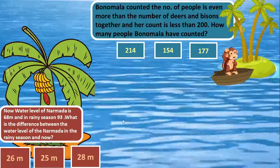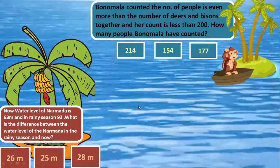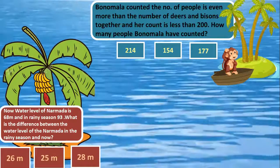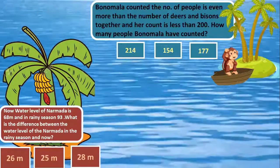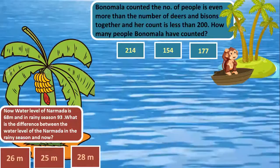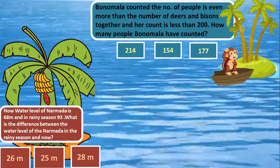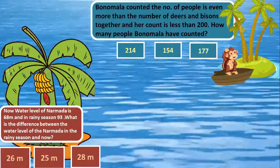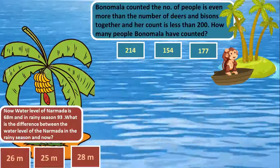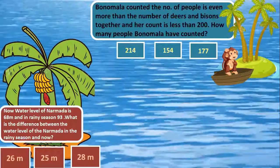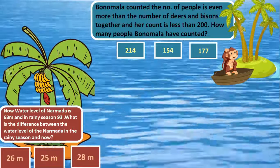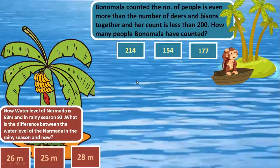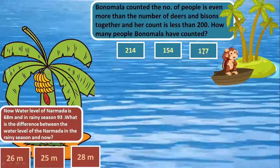Bono Mala counted the number of people is even more than the number of deers and bisons together and her count is less than 200. How many people Bono Mala have counted? Children, this question is from textbook. You know that clearly number of deers 117 and bisons 37. So find out the answer. Yes, very good. It is 177.